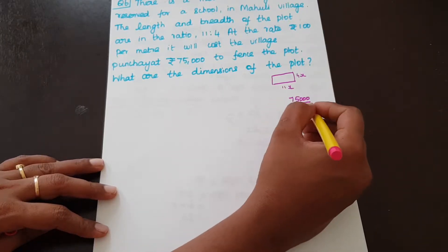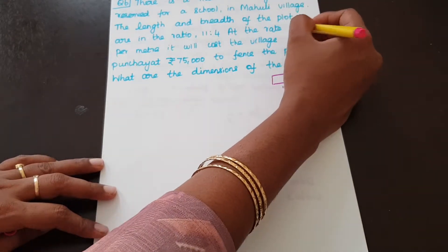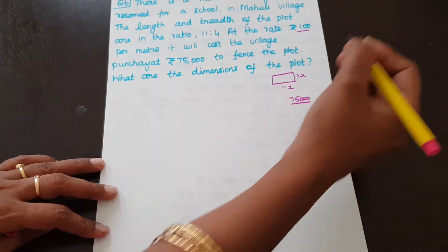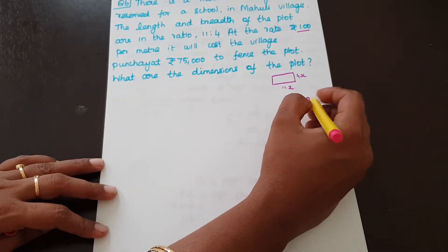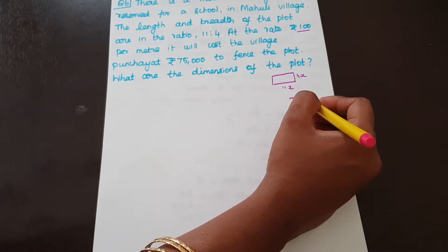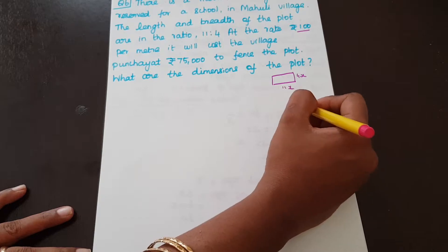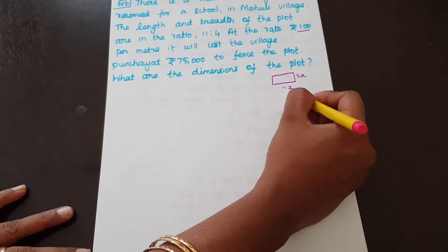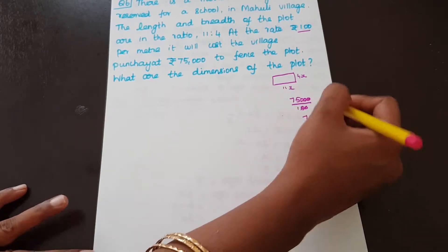At 1 meter = 100 rupees, for 75,000 rupees, how many meters? We calculate: 75,000 divided by 100 = 750 meters. So the perimeter of the plot is 750 meters.